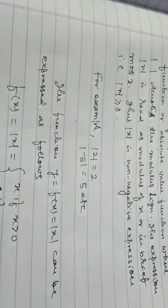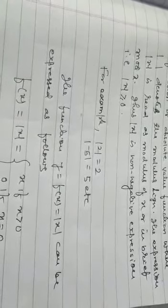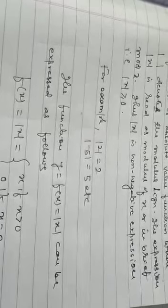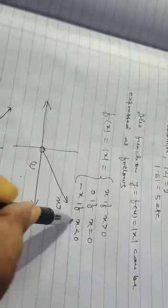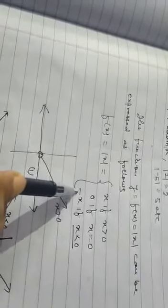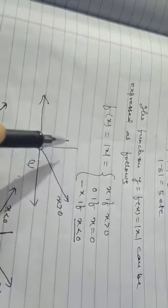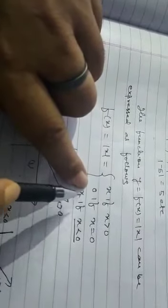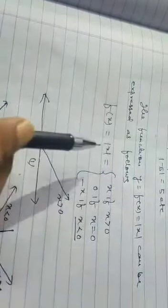Now the question is how do you define the function? A function y = f(x), that is mod x. The value of mod x is x if x is greater than 0, is equal to 0 if x is equal to 0, and minus x if x is less than 0. This is very important. I just told you the value of the modulus function is always positive. It comes with a minus sign, but observe carefully — x is negative here. So minus of minus x is positive. Suppose x is minus 1, then minus times minus is plus. In this way we define the modulus function.